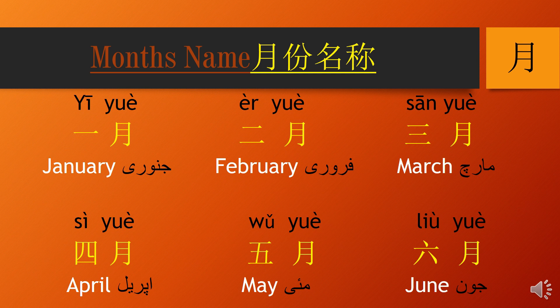Chaliye start karte hain months. Yi yue, yi yue — pehla mahina — January. Er yue, er yue — February — doosra mahina. San yue, san yue — March — teesra mahina. Si yue, si yue — April — chautha mahina.